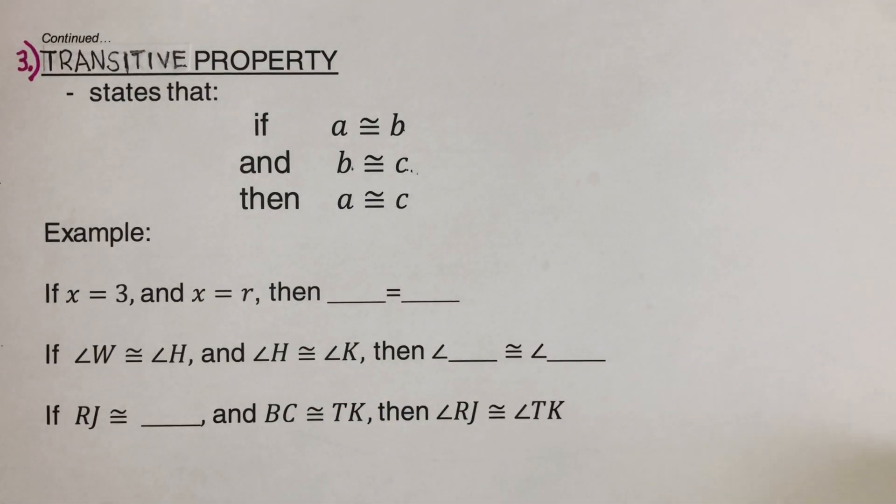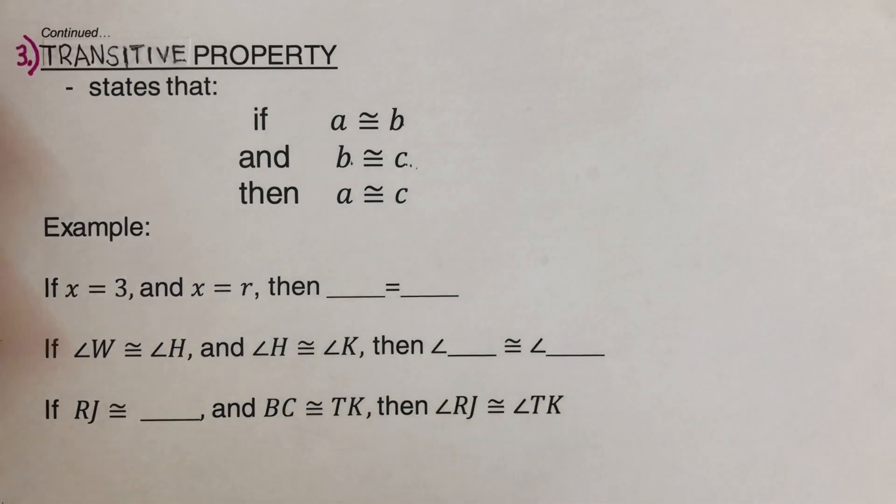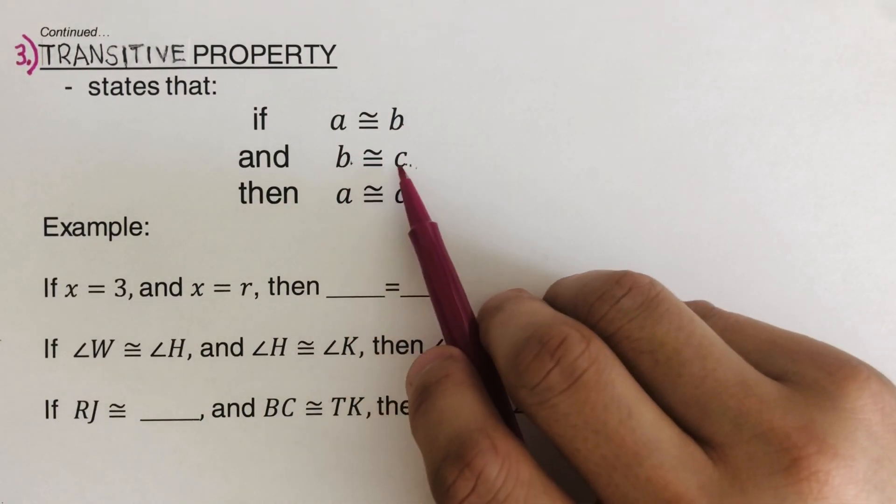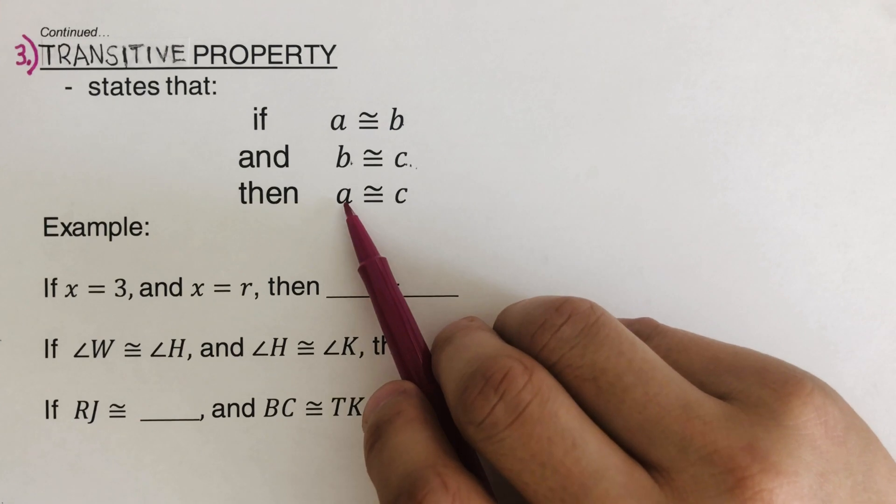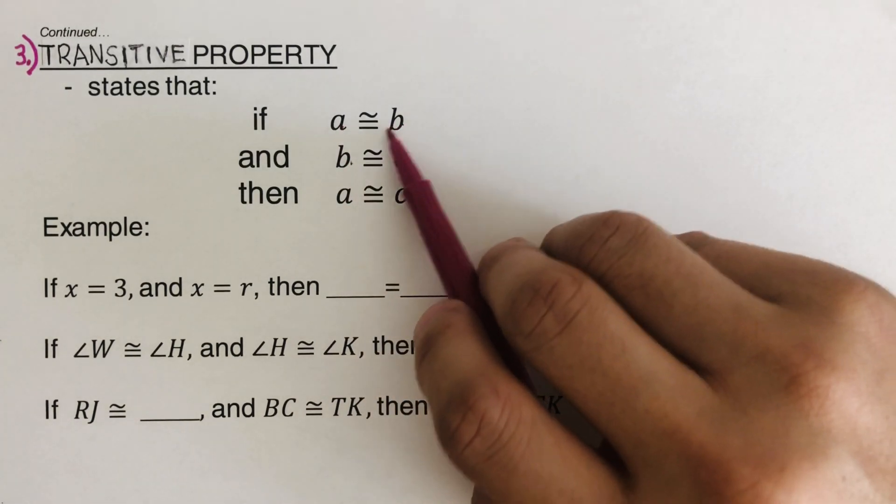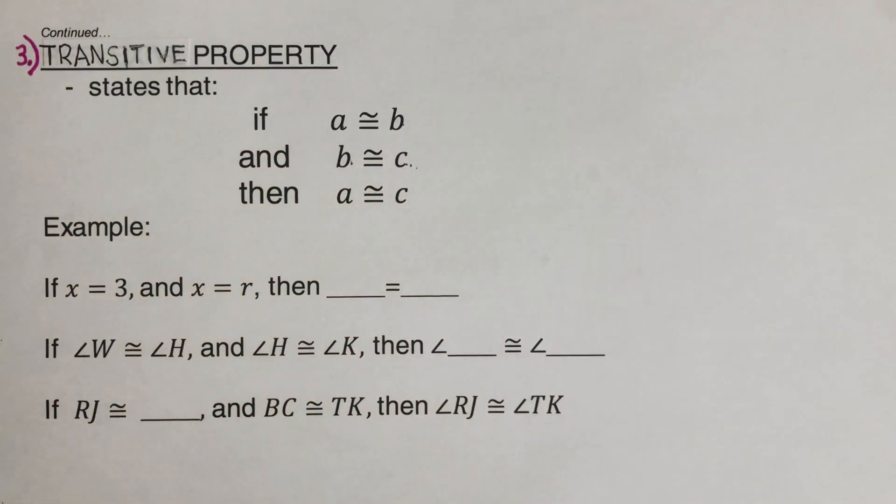Okay? So transitive property. So the statement is if A is congruent to B and B is congruent to C, that means A is congruent to C, since both A and C are equal to B. Now let's have an example to better understand this.